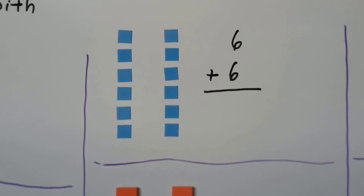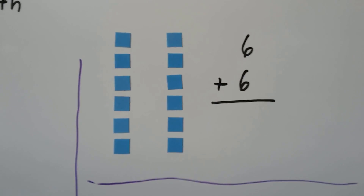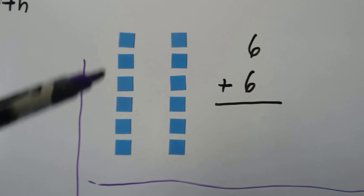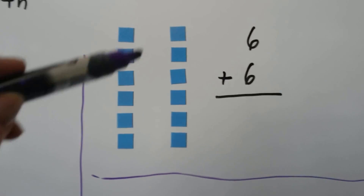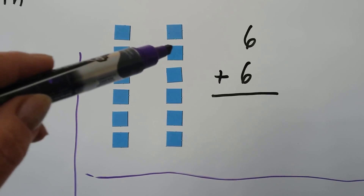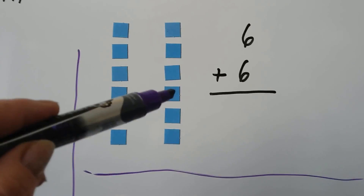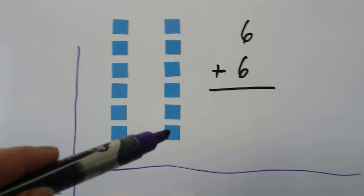We can count on from 6: 7, 8, 9, 10, 11, 12. So 6 plus 6 is equal to 12.